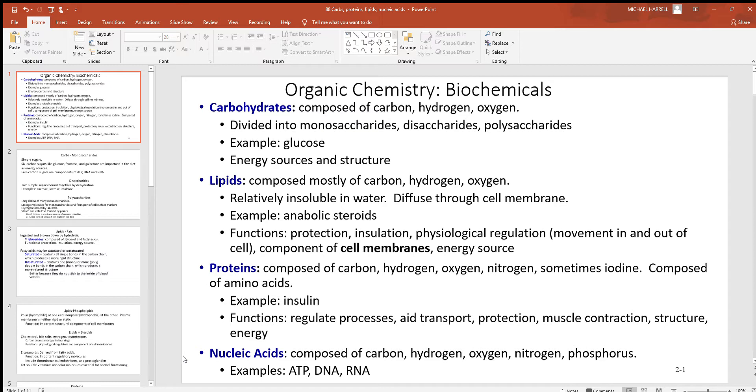Nucleic acids composed of carbon, hydrogen, oxygen, and nitrogen, and a little bit of phosphorus. Good examples of these you heard of: DNA, maybe RNA, and also ATP.